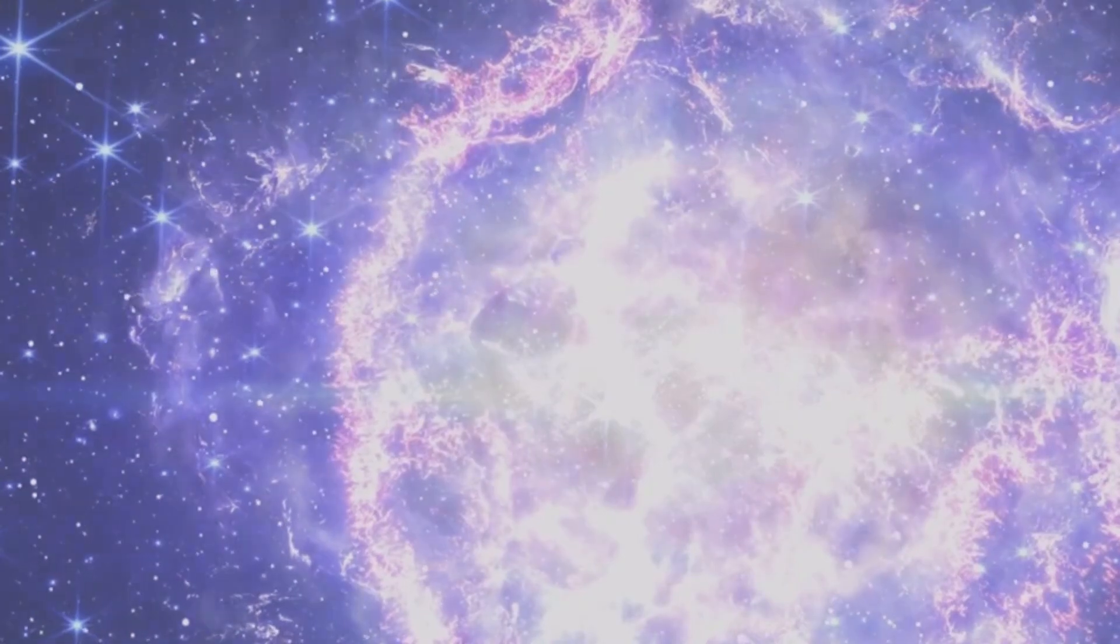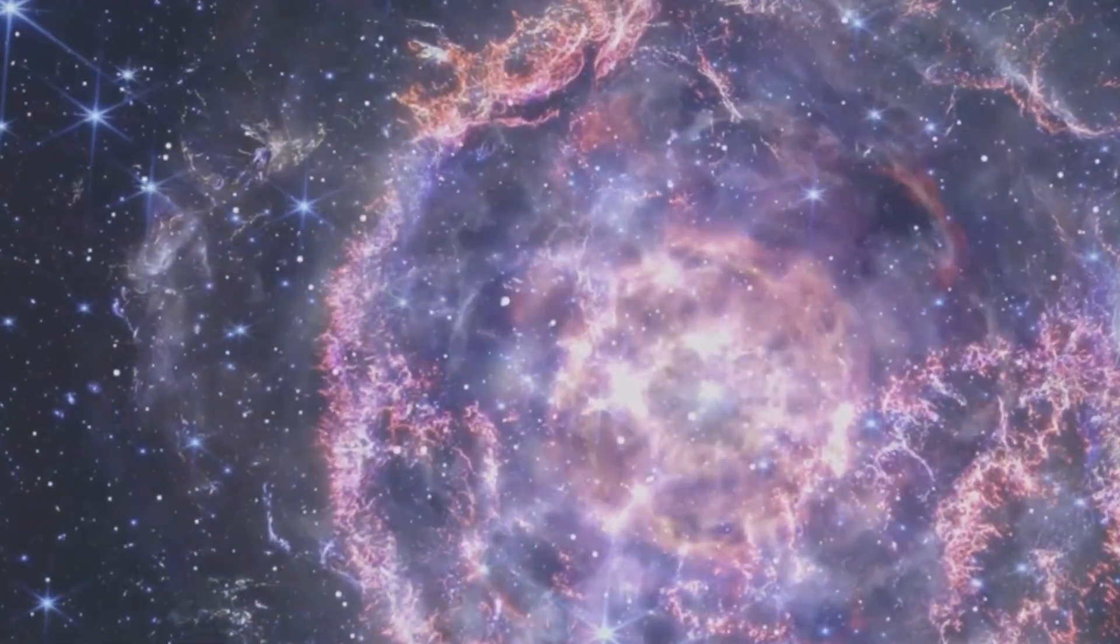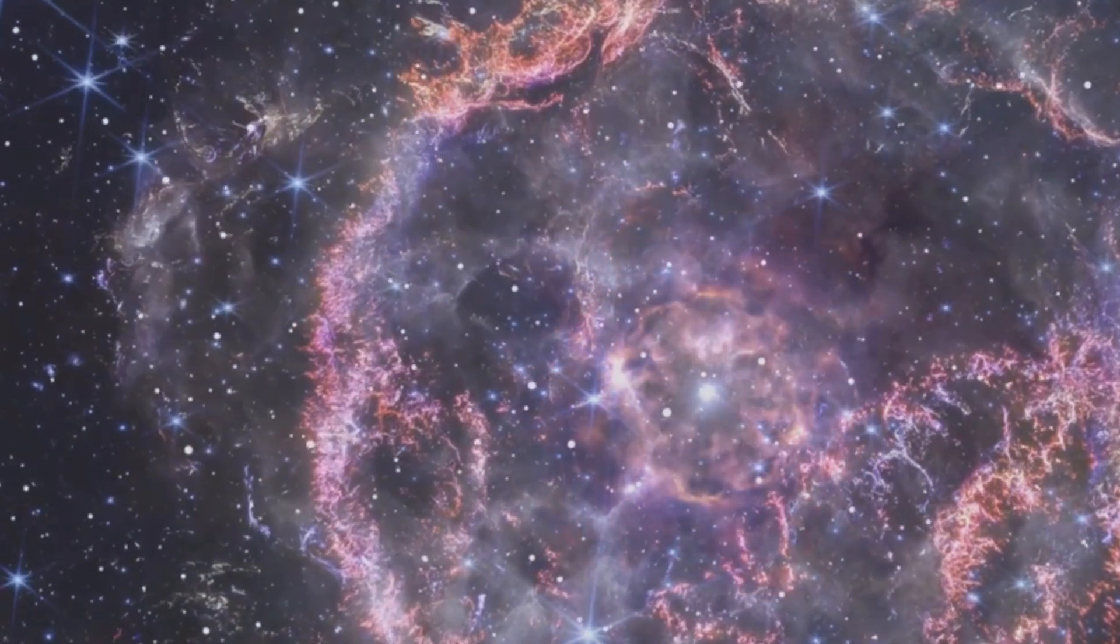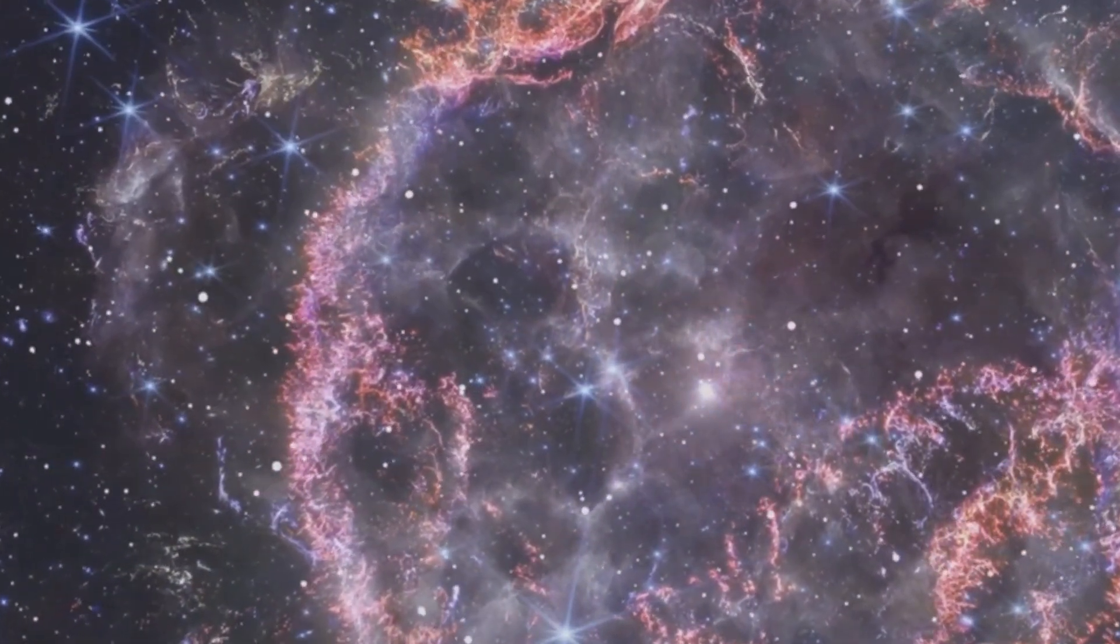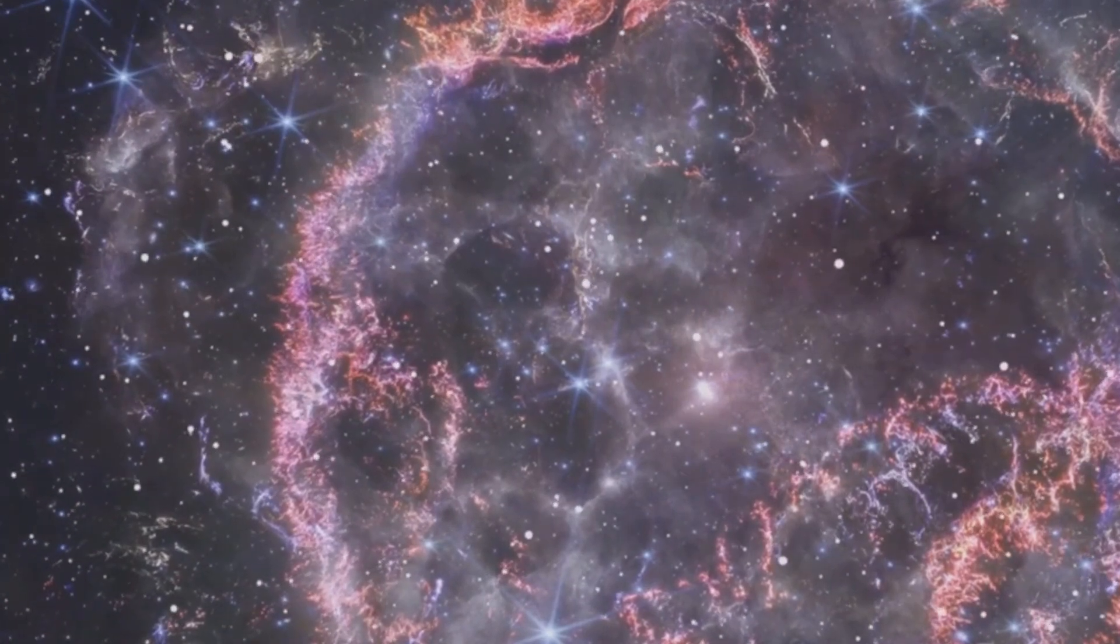Picture a star, much larger than our Sun, reaching the end of its life. This star has spent millions of years burning brightly, fusing hydrogen into helium in its core. As its nuclear fuel runs out, it can no longer support its own weight. Gravity takes over and the star begins to collapse under its own immense gravitational force.